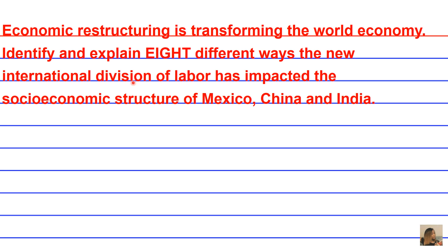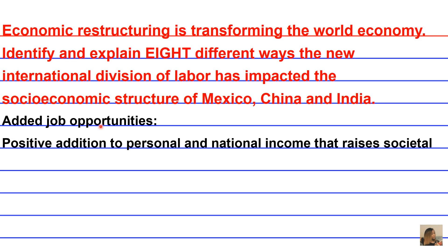One way the International Division of Labor has impacted the socioeconomic structure of developing nations like Mexico, China, and India is through added job opportunities — specifically through the positive addition to personal and national income that raises societal status and family income. These are effects of added job opportunities that come from international corporations based outside of these countries.